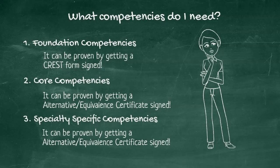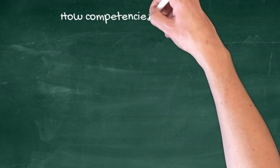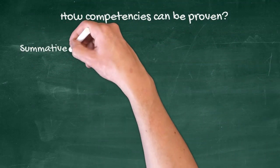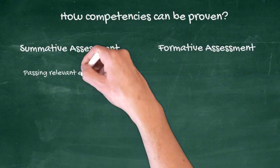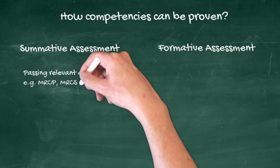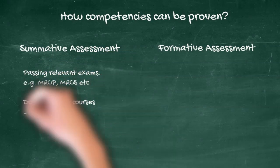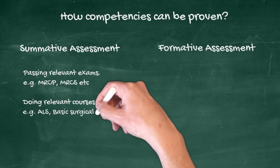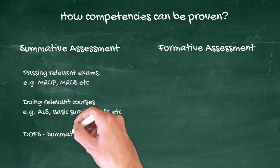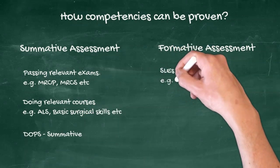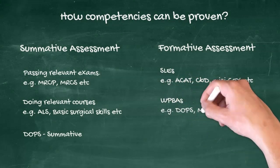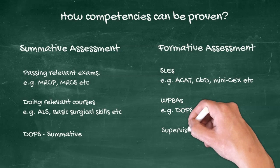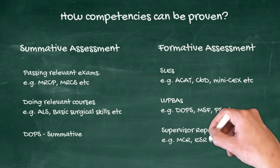How can you prove those competencies? There could be two types of assessments: summative and formative. Summative assessments include passing the relevant exams — for example, before a doctor joins ST3 of any medical specialty they have to pass MRCP. There are also relevant courses you have to complete, and DOPS — Directly Observed Procedural Skills — which can be summative after you've done the formative assessment.